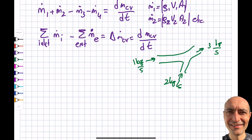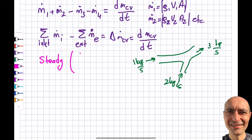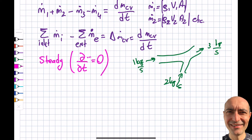Good news: in thermodynamics we typically deal with steady-state steady-flow devices. I want to talk about what 'steady' means from two angles: mathematics and physics. Mathematically, it simply says that some property of the control volume does not change over time — its time derivative is zero.